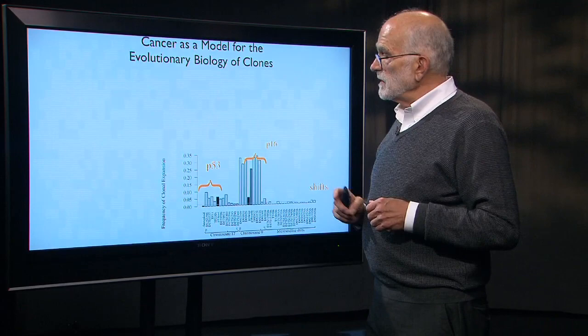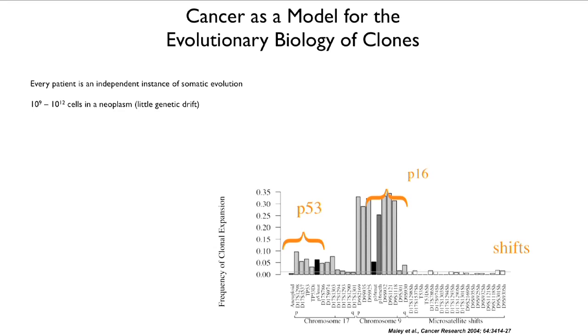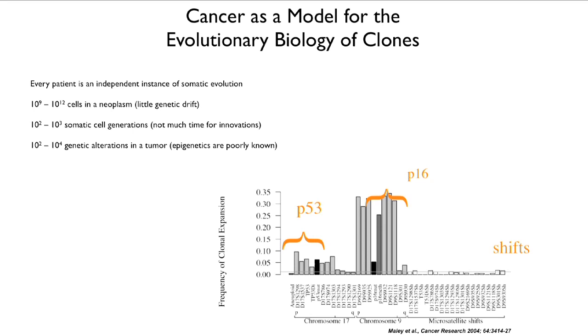If we look into the evolutionary biology of these clones, we can actually use cancer to understand clonal evolution. Every patient is an independent instance, so we have lots of replicates. There are about a billion to a trillion cells in the neoplasm, so there's very little genetic drift. There are about 100 to at most 1,000 somatic cell generations — not much time for innovation, not very precise adaptation.